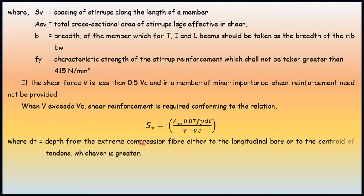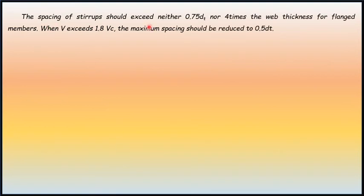Where dt equals depth from the extreme compression fiber to the longitudinal bars or to the centroid of tendons, whichever is greater. The spacing of stirrups should exceed neither 0.75 times dt nor 4 times the web thickness for flanged members.